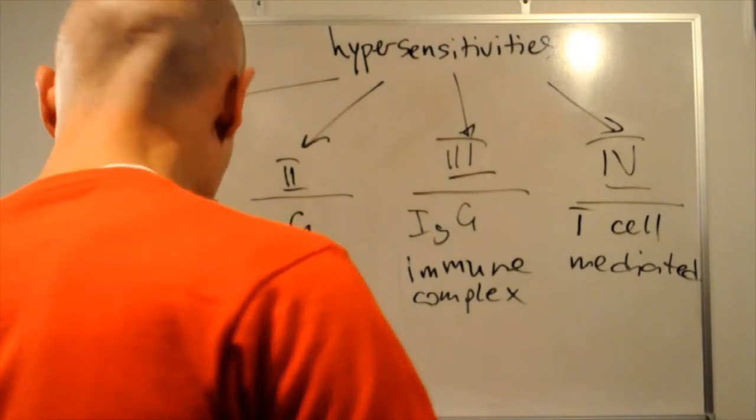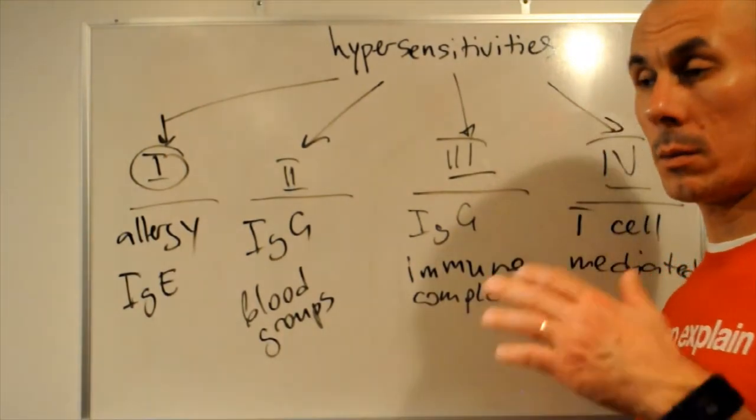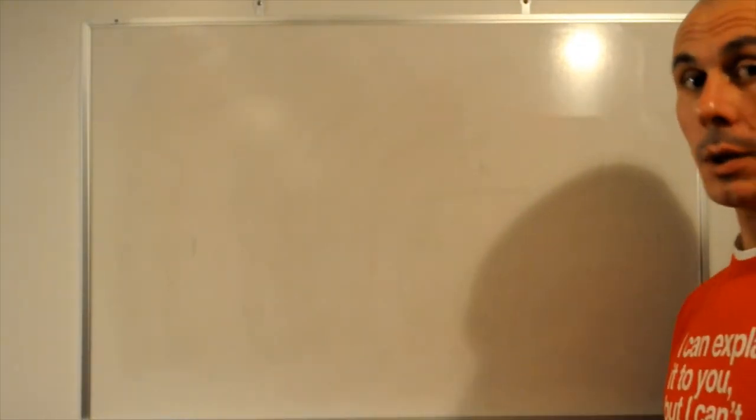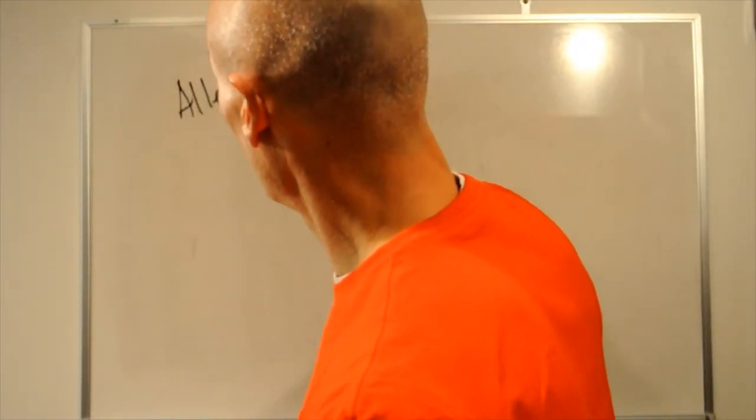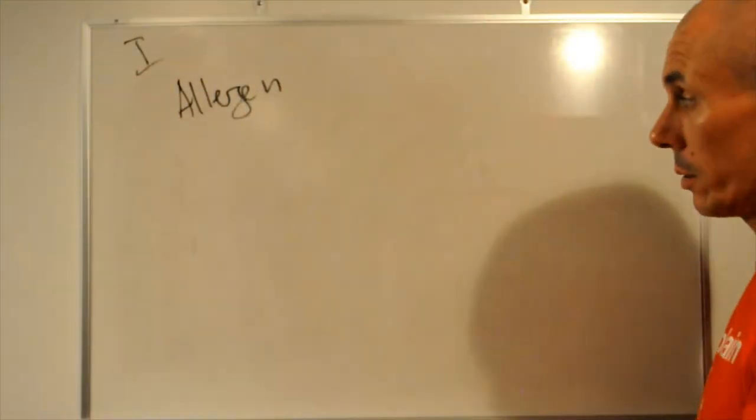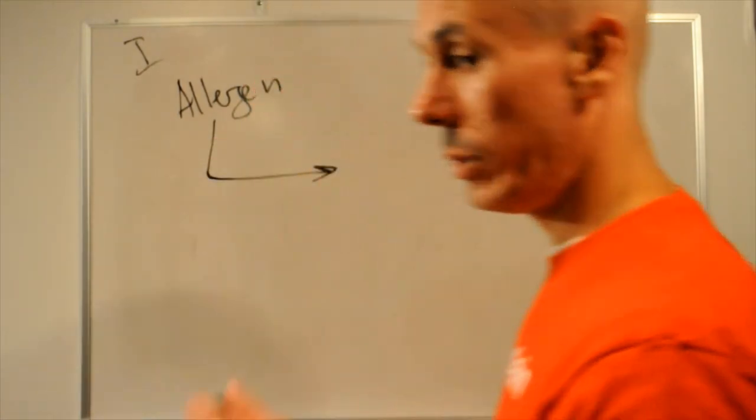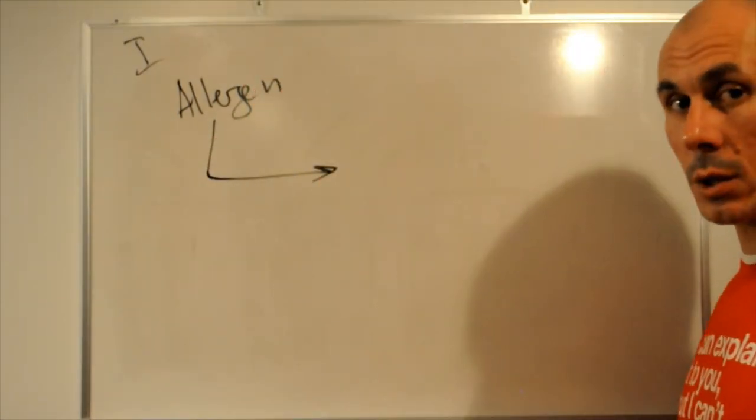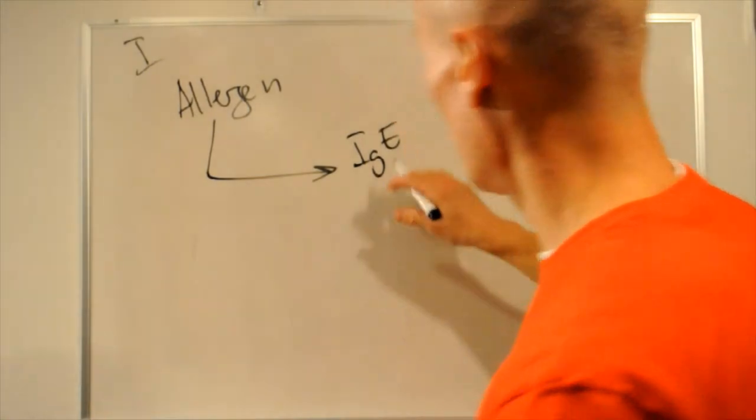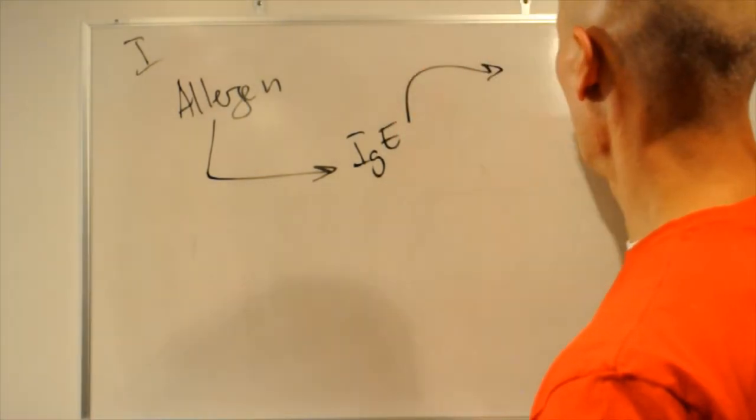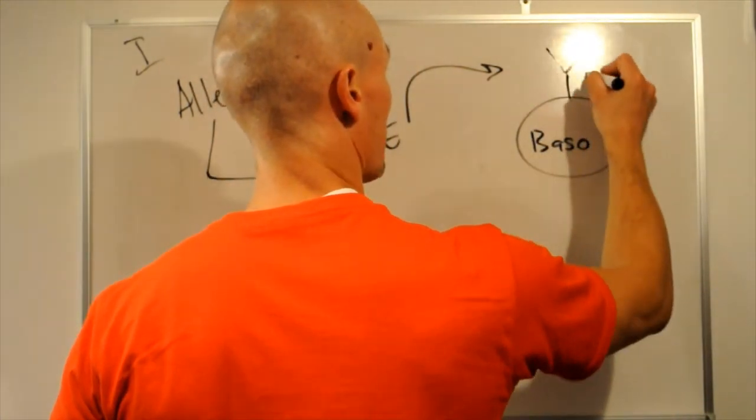Now, I want to say a few words about each of these types, but I'm going to do it separately. So, hypersensitivity type 1. We have allergen that is recognized by the B-cells, stimulates the production, differentiation and proliferation of B-cells. And plasma cells produce IgE. IgE binds to the surface of the basophil.